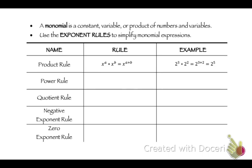Power rule — that's when you raise an exponent to a power. Say you have x to the a raised to the b power; that's going to be x to the a times b. A power raised to a power is multiplication. An example: 2 to the 3rd power raised to the 2nd power equals 2 to the 3 times 2 power, which is 2 to the 6th.